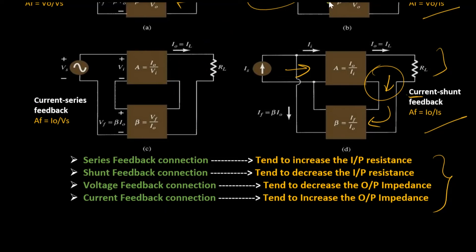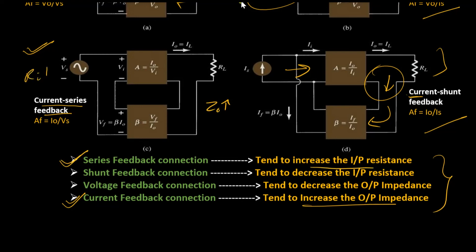Suppose we have to develop an understanding of input and output impedances of these networks — we simply need to know the type of feedback connections they have. For example, for current series feedback, the current feedback increases the output impedance, so it will have a high output impedance. Likewise, since it has a series feedback connection as well, its input impedance will be high as well. So both the impedances will be high in this case. Similarly, we can determine this for all the other networks.